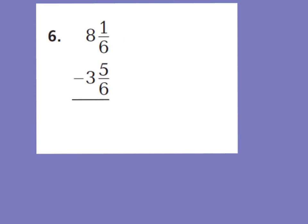Let's take a look at question number 6. I have 8 and 1 sixth minus 3 and 5 sixths. We want to start with step 1, which is subtract our fractional amount. I cannot take 5 sixths from 1 sixth, but I can make it work because I have 8 wholes. Let's borrow a whole from my 8 wholes and make it 7 wholes. Since I took away a whole, I'll make a whole — I'm adding 6 sixths because you pay attention to your denominator. That tells you what your whole will be divided into. So 1 sixth plus 6 sixths is 7 sixths.